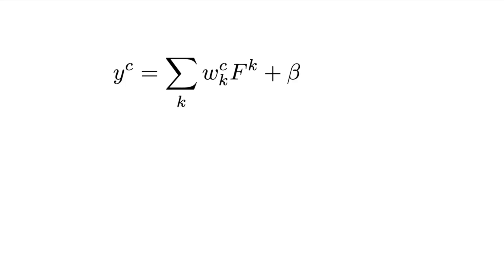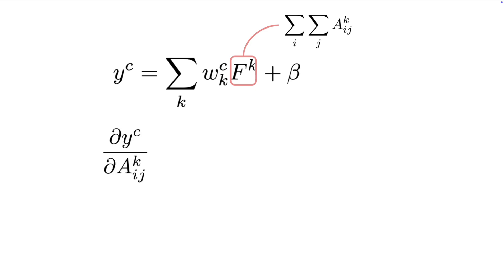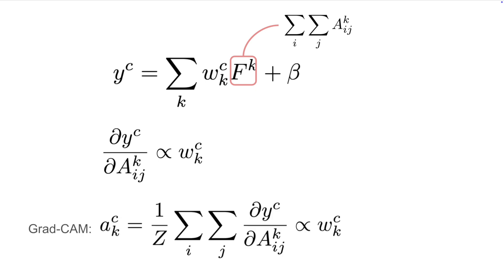We won't go over the full proof for this, but the intuition is clear. Consider the logits from the GAP network given by this equation. The GAP values FK are a function of elements in the feature maps AK. With GradCAM, we would take the derivative of YC with respect to the elements of the feature maps. Doing this, the only values would be WCK. In other words, the gradients when applying GradCAM are the same as the weights used by CAMs.